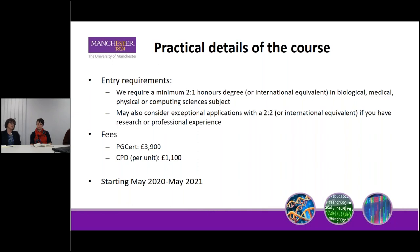In terms of entry requirements, we look at each application on its own merit, but as a basis we welcome people with a first or honours degree within areas such as medical or biological sciences. We've had an array of really different backgrounds - people coming from IT, people coming from clinical practice. Also in terms of fees, the full PG cert is £3,900 and the CPD per unit is £1,100. We're in the middle of unit three and about to launch unit four, but the units will start again from May onwards. To do unit four you need to have done unit one in advance, but you can do them in a sequence of your own choosing.